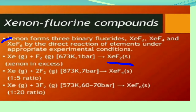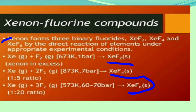For the preparation of XeF4, the required ratio of xenon to fluorine is 1:5. That means xenon is reacted with excess fluorine — 2 F2 — at 873 Kelvin temperature and 7 bar of pressure. Here we get XeF4 as a solid.